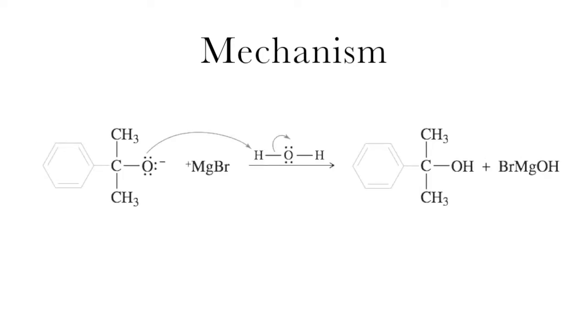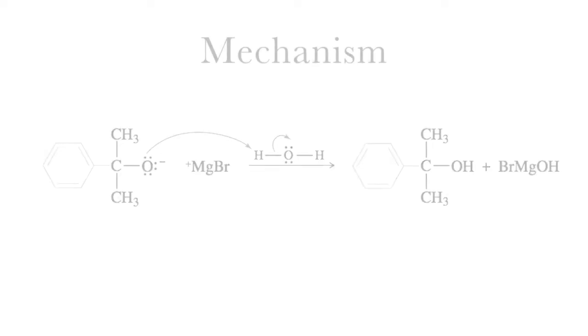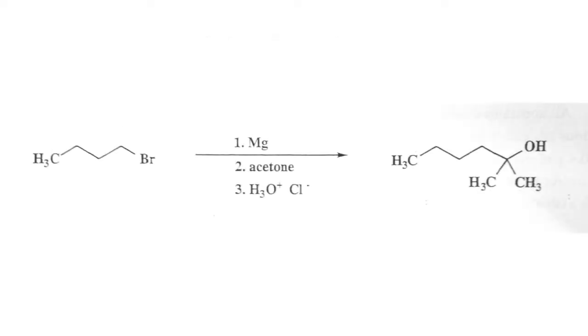Finally, the newly created oxyanion is going to pick up a hydrogen from water and be protonated, thus giving you your tertiary alcohol. Our actual reaction today is between bromobutane, magnesium, and then acetone, finishing off with a hydrochloric acid protonation.